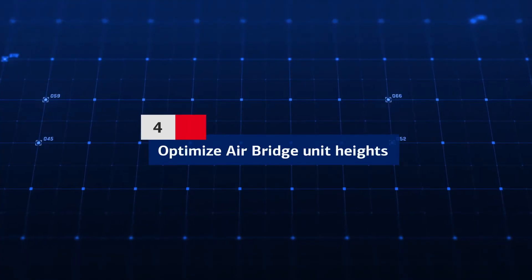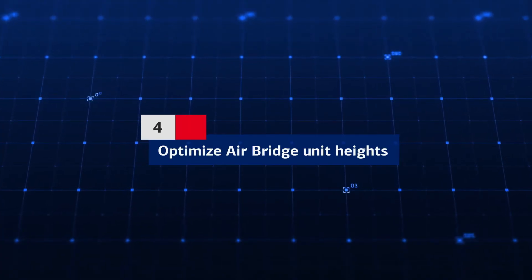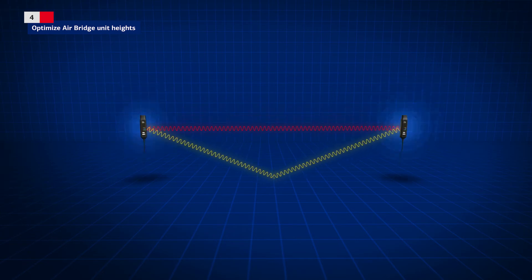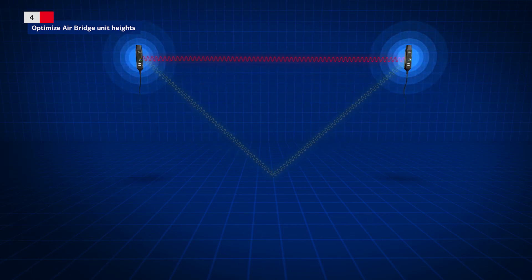Rule 4: Optimize AirBridge unit heights. Radio signals reflected in the ground are important, but generally cannot be avoided. Whilst you can't change ground reflections, you may be able to alter the height of the AirBridge units, which can even result in a positive impact on the transmission.